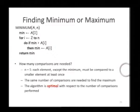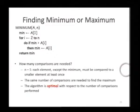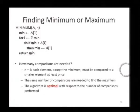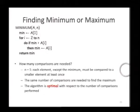Therefore, this algorithm that we have just discussed is an optimal algorithm with respect to the number of comparisons. The algorithm above performs exactly n minus 1 comparisons, and therefore this is an optimal algorithm.